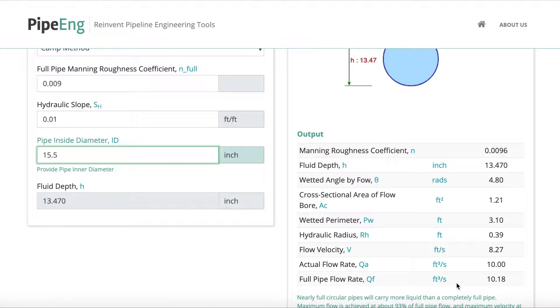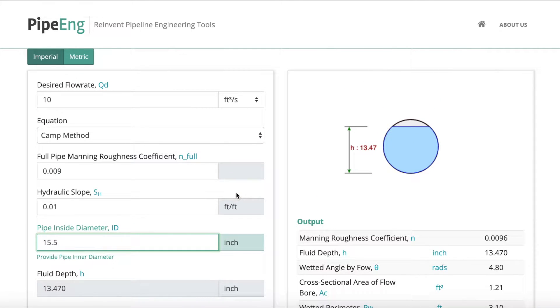That will run this calculation and also tell you the full flow rate, full pipe flow rate. This is basically the pipe capacity. So this is how you size a line when you know the flow rate.